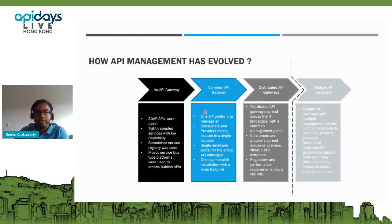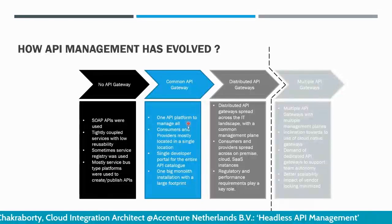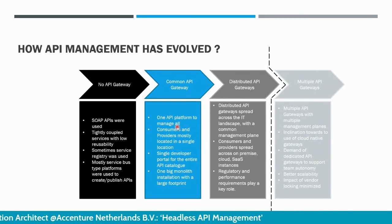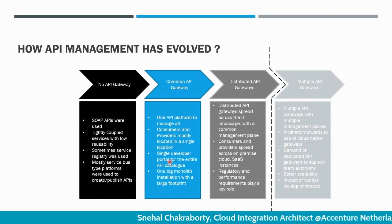I'll start with a bit of a rewind on how API management has evolved over the years. Ten to fifteen years ago there were no API gateways at all — SOAP APIs were used, mostly tightly coupled, sometimes service registries were used, but there was no proper API catalog. Systems were mostly service bus kind of systems. Then we slowly moved to a common API gateway platform where a big monolithic installation acted as the API gateway, with consumers and providers mostly on-premise and a single developer portal acting as a catalog.